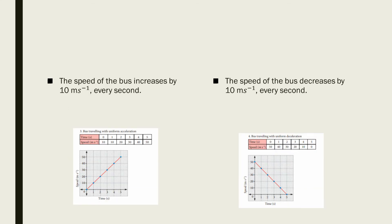Here the speed of the bus increases by 10 meters per second every second. In the first second it reaches 10 m/s, in the second 20 m/s, in the third 30 m/s, in the fourth 40 m/s, and in the fifth second 50 m/s. So it has an increasing straight line and is said to be uniform acceleration.